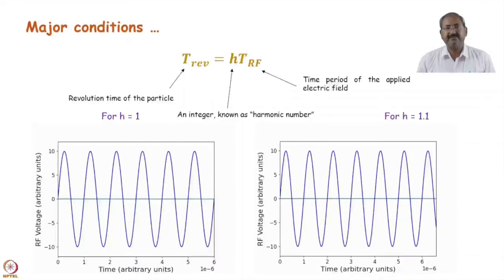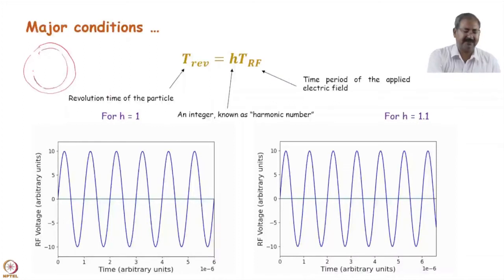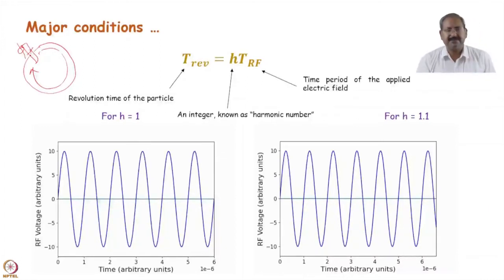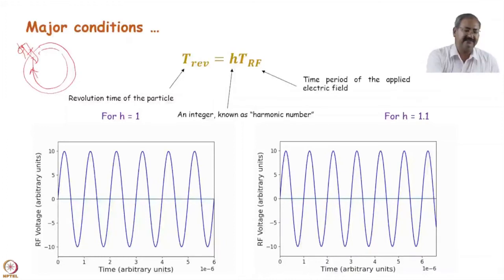Mathematically, the revolution time T_revolution must be an integer multiple h of the RF time period: T_rev = h × T_RF. Suppose a particle is revolving and crosses the cavity at phase φ of the RF field. If the revolution time is an integer multiple of the RF period, the particle will see the same phase φ each time it crosses the cavity. The phase will not change, and on each pass the particle gets energy at the correct phase for acceleration.